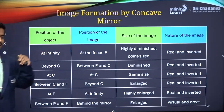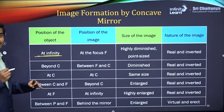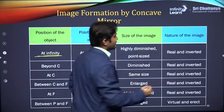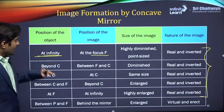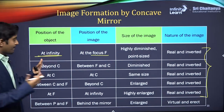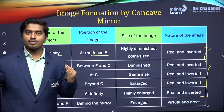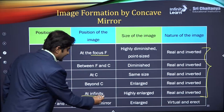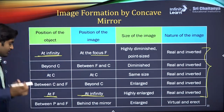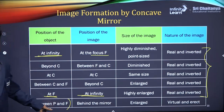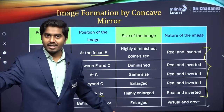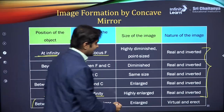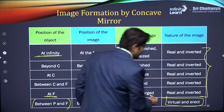Summary of all ray diagrams: object at infinity → image at focus, highly diminished, real and inverted. As you bring the object closer, the image moves farther from the mirror. Object at C → image at C, same size, real and inverted. Object between F and C → image beyond C, enlarged, real and inverted. Object at F → image at infinity, highly enlarged, real and inverted. Object between pole and F → image behind mirror, enlarged, virtual and erect.